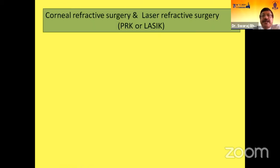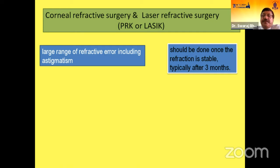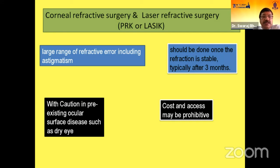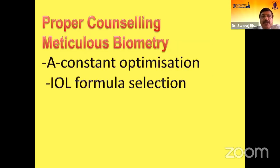About PRK and LASIK: a large range of refractive errors including astigmatism can be corrected. It should be done once the refraction is stable, typically after three months, with caution in pre-existing ocular surface disease such as dry eye. Cost and access may be prohibitive. Proper counselling, meticulous biometry, A-constant optimization, and IOL formula selection are the mainstay of prevention.